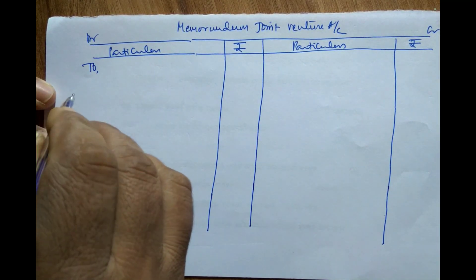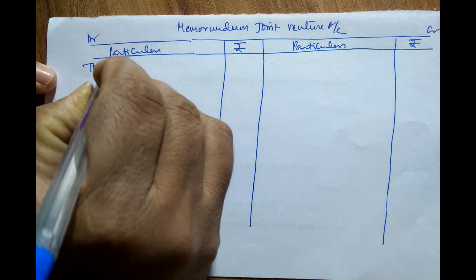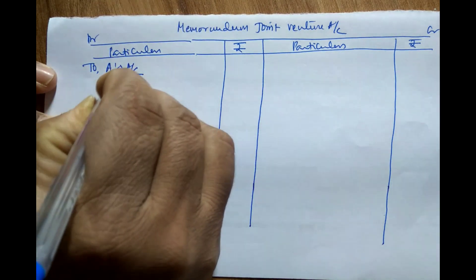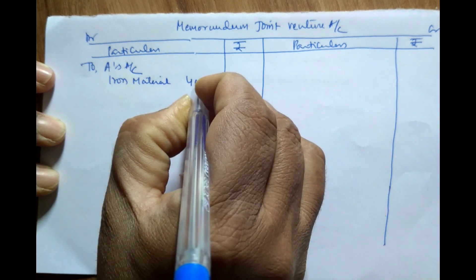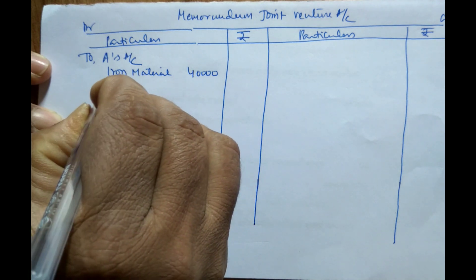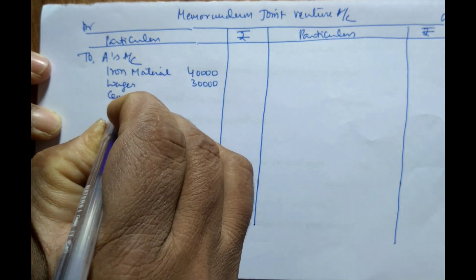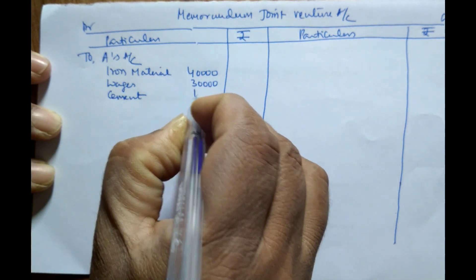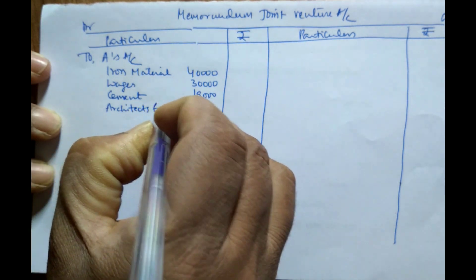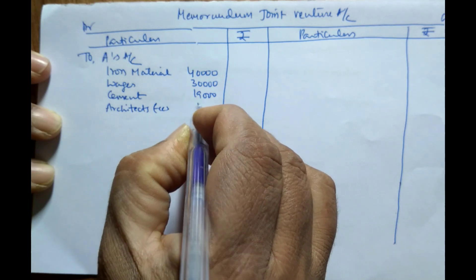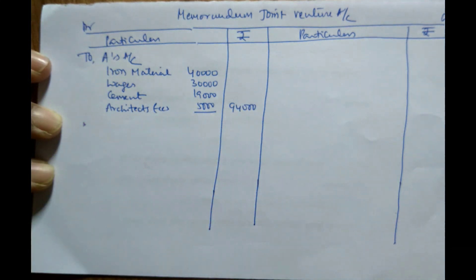First, we will take the items of expenditure made by A. A has provided iron material costing Rs. 40,000, wages Rs. 30,000, cement costing Rs. 19,000, and paid architect fees of Rs. 5,000. The total amount spent by A for this business is Rs. 94,000.